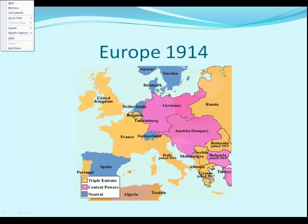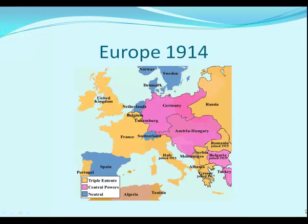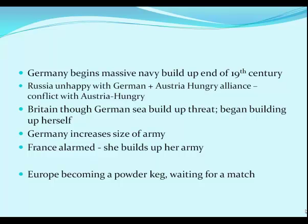In Europe in 1914, Germany and Austria-Hungary were right through the middle of Europe, feeling surrounded with France on one side and Russia on the other. Germany began a massive naval buildup at the end of the 19th century. Russia was unhappy with the German and Austro-Hungarian alliance. Britain looked over and saw Germany building up her navy and considered it a threat, so Britain began building ships too. Germany then increased the size of her army, France became alarmed and built up her army — Europe was becoming a powder keg just waiting for a match.